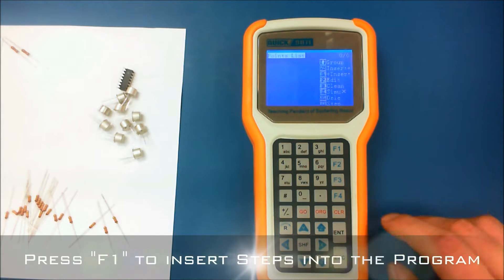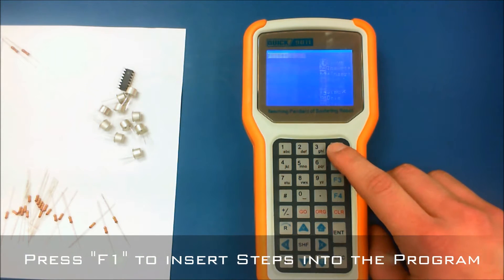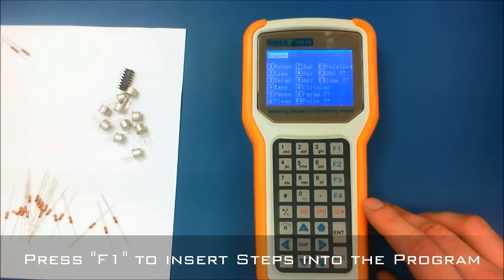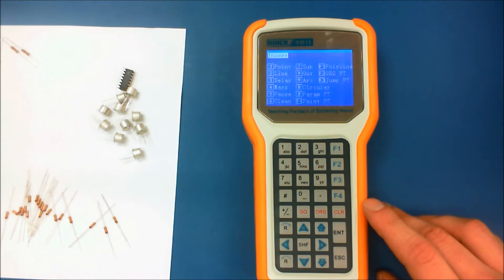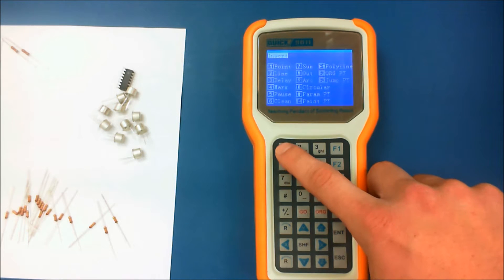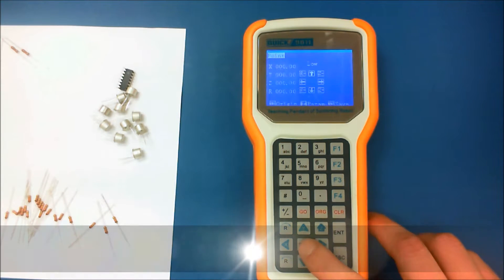So to insert a new point we'll go ahead and press F1. This will then prompt us with the screen as to what type of move we would like to make. On this screen we'll go ahead and put point as we're simply programming a single point.